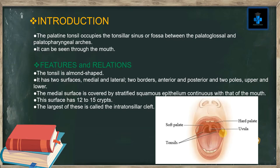Features and relations: The tonsil is almond-shaped. It has two surfaces — medial and lateral — two borders — anterior and posterior — and two poles — upper and lower. The medial surface is covered by stratified squamous epithelium continuous with that of the mouth. The surface has 12 to 15 crypts, and the largest of these is called the intra-tonsillar cleft.